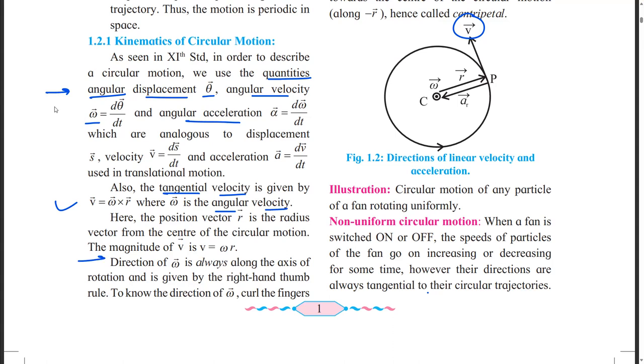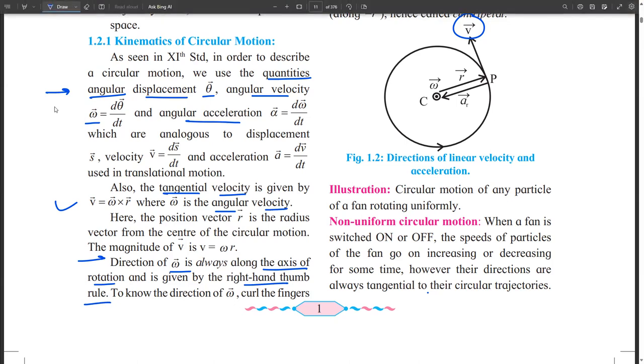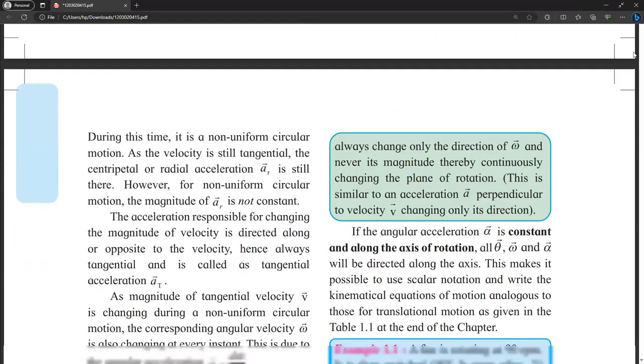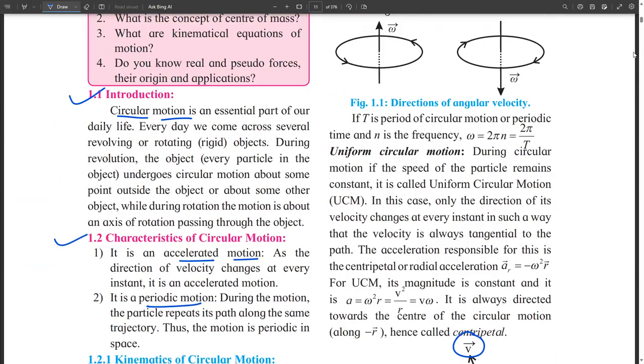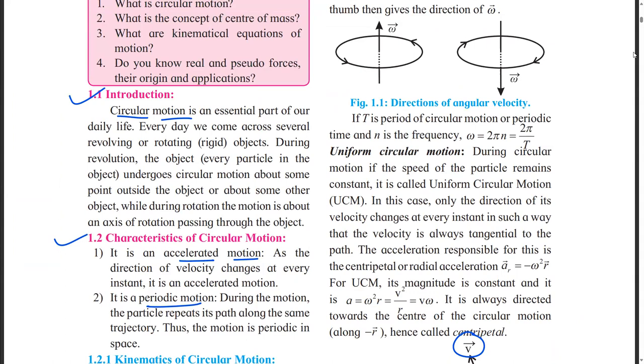And what is the direction of omega bar? It is always along the axis of rotation. That is our right hand thumb rule. Are you getting? So they have given the direction of angular velocities - either clockwise or anticlockwise. If it is upward, that is anticlockwise. If downward, this is clockwise direction. And if we have to find out, the formula they have given is 2πn or 2π/T. So that we can use.